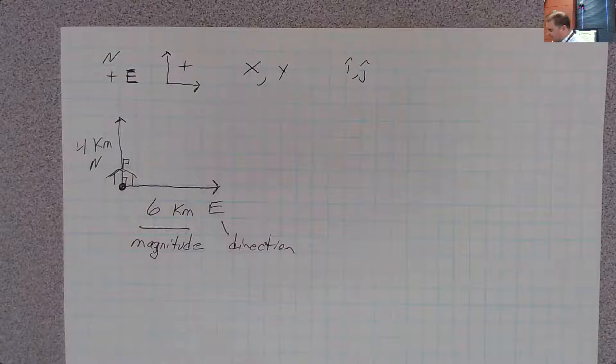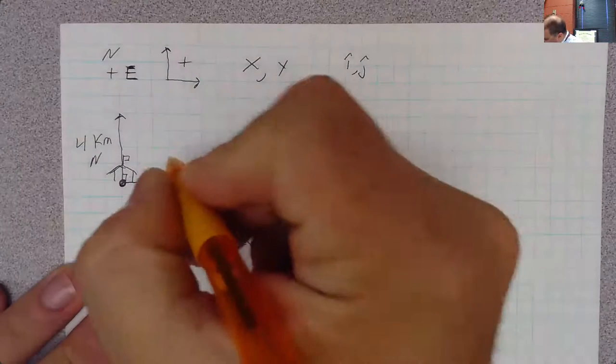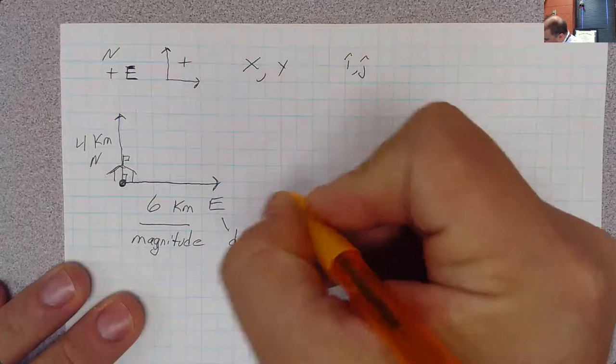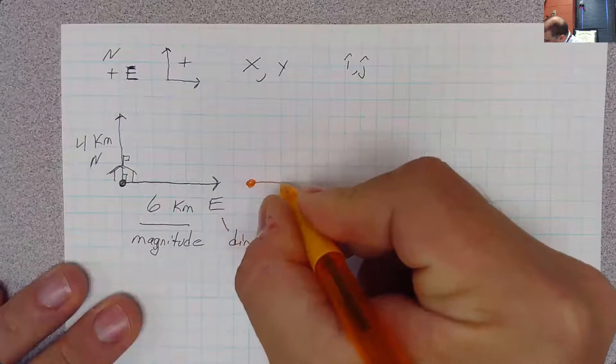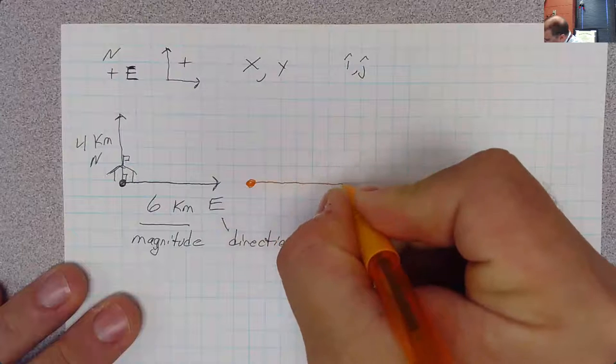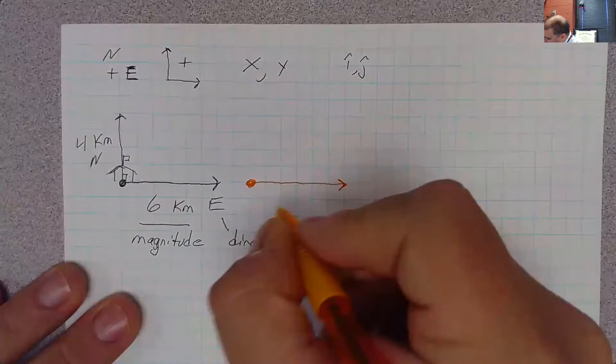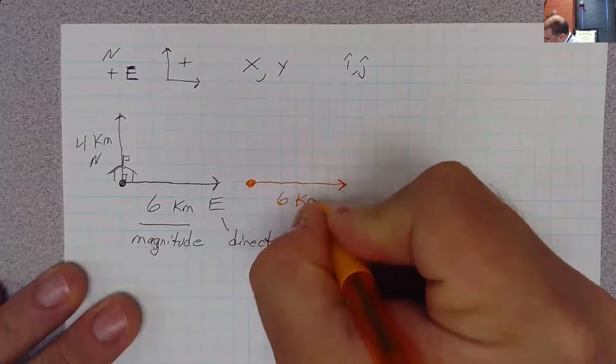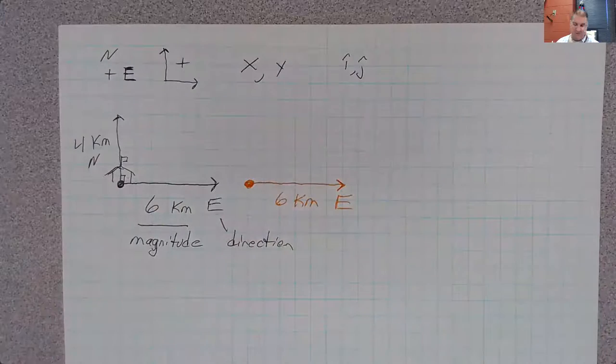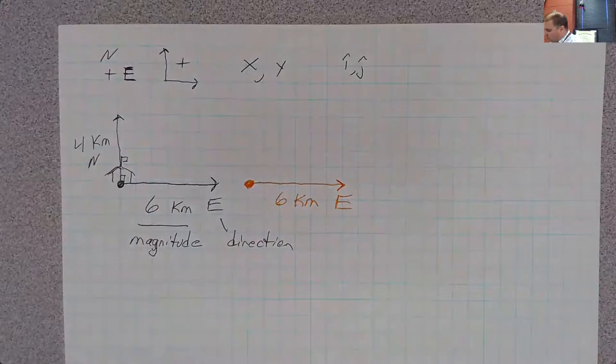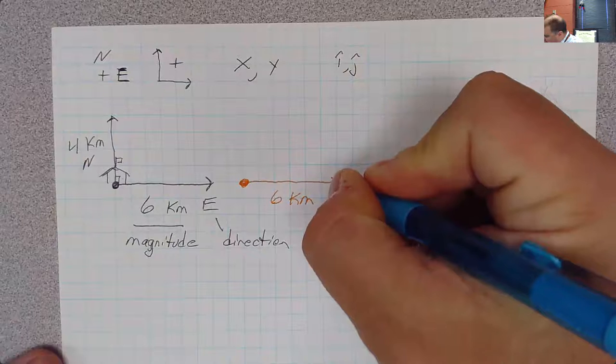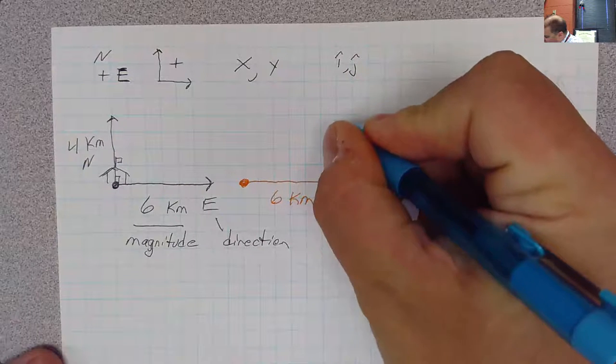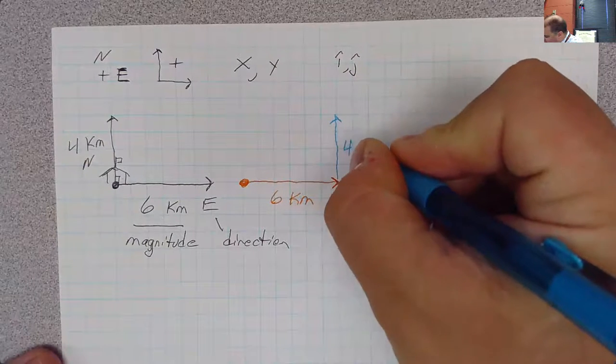So if we say this 6 kilometers east, I'm just going to shift it over here. To redraw this, 1, 2, 3, 4, 5, 6. So I'm using the squares right now, 6 kilometers east. If we say that we move this other vector so its tail starts from that head, then 1, 2, 3, 4 kilometers north.